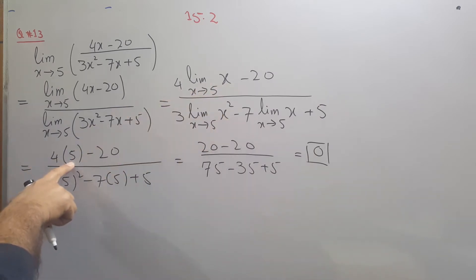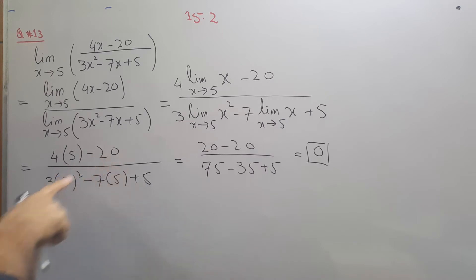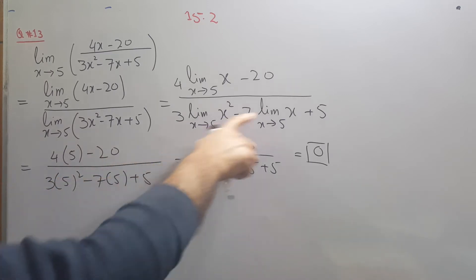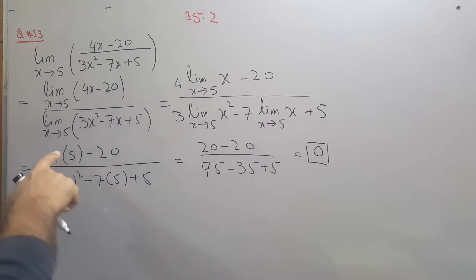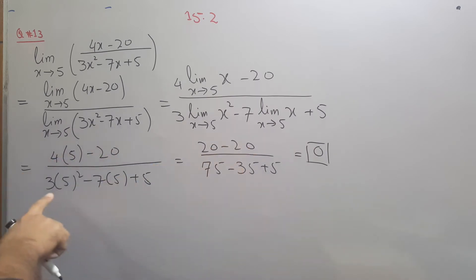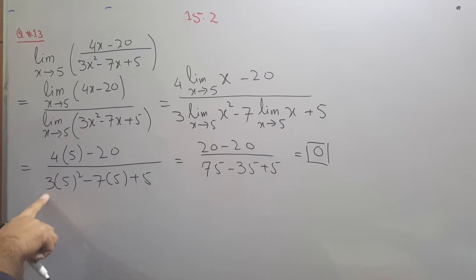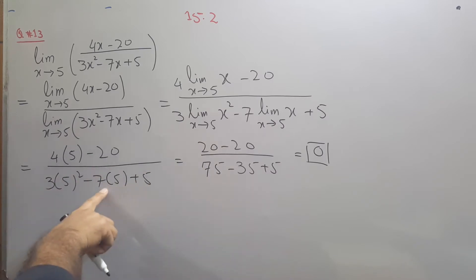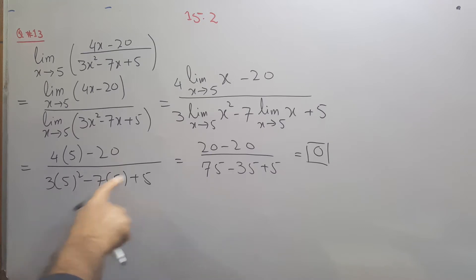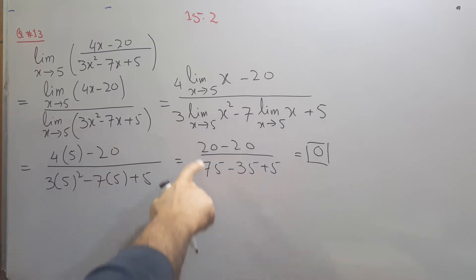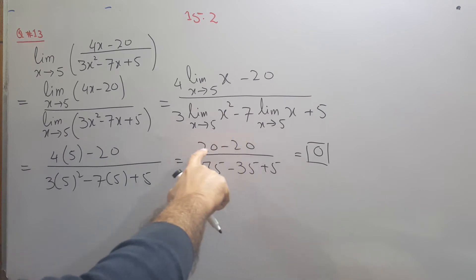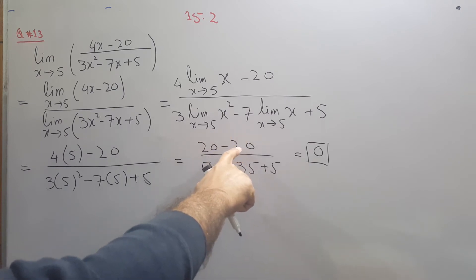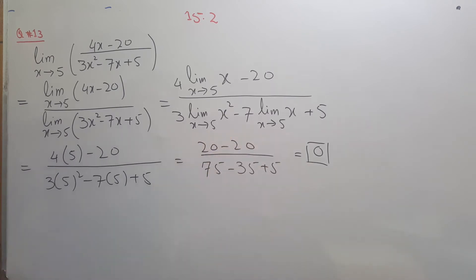Now apply the limit: 4 times 5 minus 20 in the numerator gives 20 minus 20 equals 0. In the denominator: 3 times 5 squared is 3 times 25 equals 75, minus 7 times 5 is 35, plus 5 gives 45. So we have 0 divided by 45, and 0 divided by anything is 0.